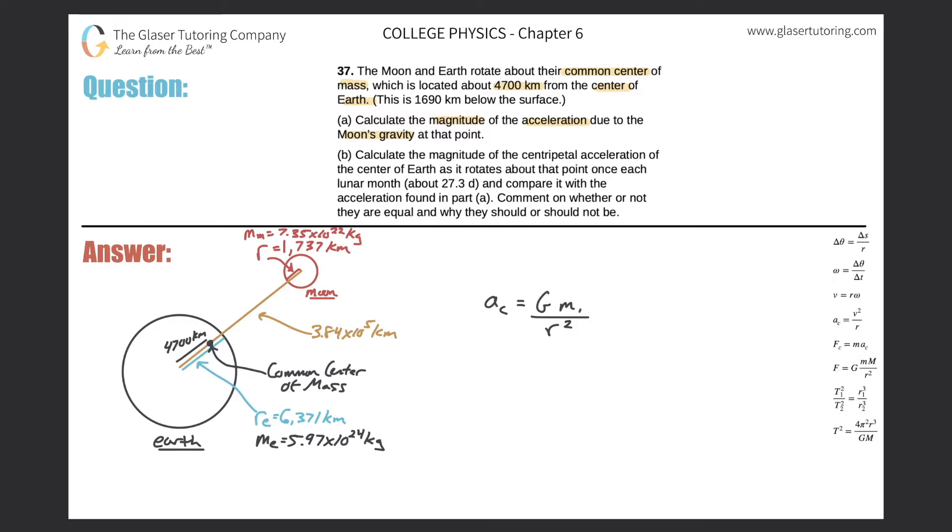So now all we have to do is start plugging some values in. Remember this mass is the mass of the moon. So I have my centripetal acceleration equal to the gravitational constant, which is 6.673 times 10 to the minus 11 times the mass of the moon. Here's the mass of the moon, 7.35 times 10 to the 22nd, all divided by the distance between the center of the moon and this particular point.